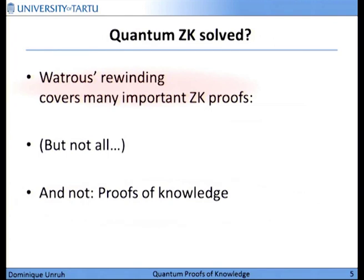Does the Watrous result solve the problem of quantum zero knowledge? It covers a lot of existing zero-knowledge protocols and can show the zero-knowledge property in the quantum case. There are some exceptions, but that's not the topic of this talk. But there's one big limitation: if we don't want just zero-knowledge proofs, but zero-knowledge proofs of knowledge, then the Watrous technique does not work. And this is what I will show you in this talk, along with how we can get proofs of knowledge with a different technique.